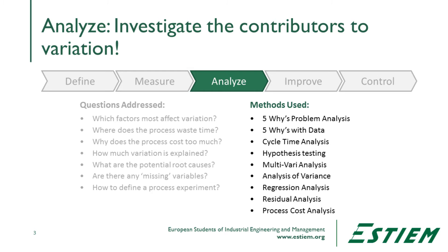We're going to use a number of methods in this process. Some of them we've talked about before, like the five whys problem analysis and the five whys with data. We'll introduce process cycle time analysis and look at it in more depth, along with hypothesis testing and multivariate analysis. Analysis of variance will also be covered, and we'll understand regression analysis and the fitted line plot. We'll also look at residuals analysis — what's left over after we've created a statistical model of the process, which is the variation that can't be explained. And finally, we'll take a look at process transaction costs to identify waste much more specifically.